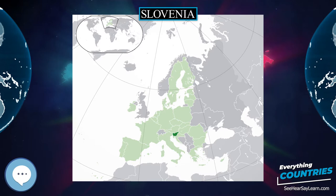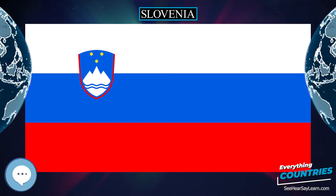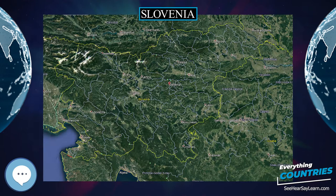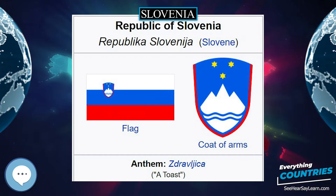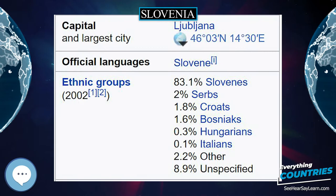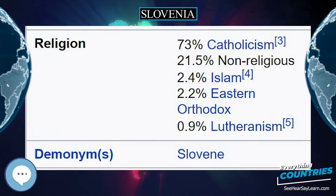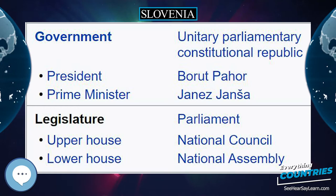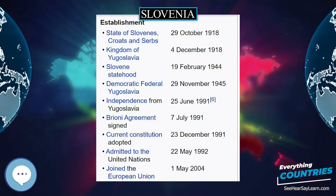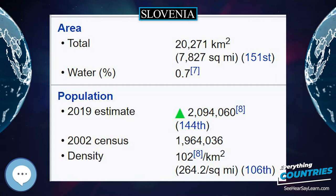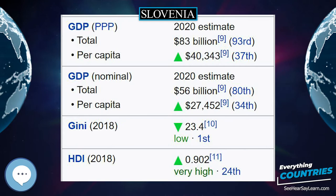Slovenia, officially the Republic of Slovenia, abbreviated RS, is a country located in southern central Europe at a crossroads of important European cultural and trade routes. It is bordered by Italy to the west, Austria to the north, Hungary to the northeast, Croatia to the southeast, and the Adriatic Sea to the southwest. It covers 20,273 square kilometers and has a population of 2.07 million. One of the successor states of the former Yugoslavia, Slovenia is a parliamentary republic and a member of the United Nations, the European Union, and NATO. The capital and largest city is Ljubljana.